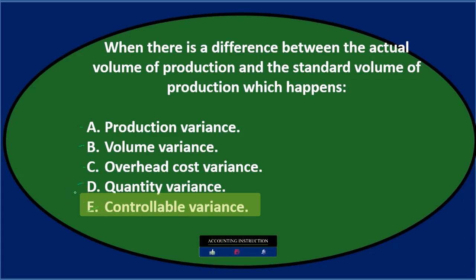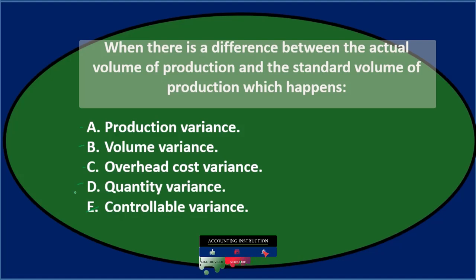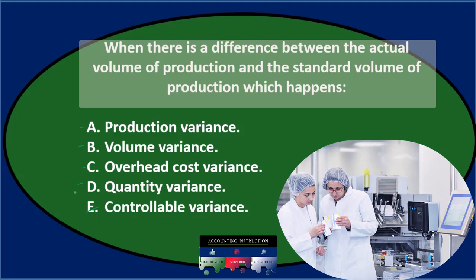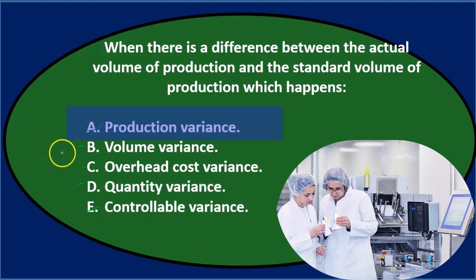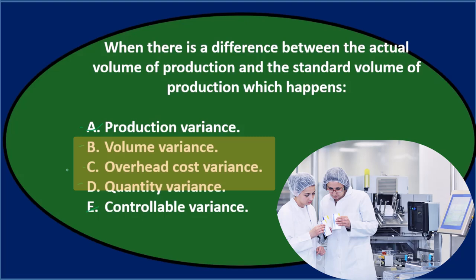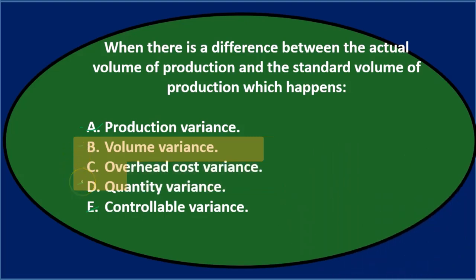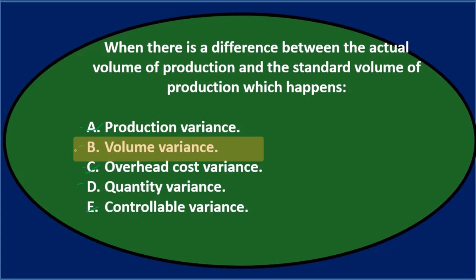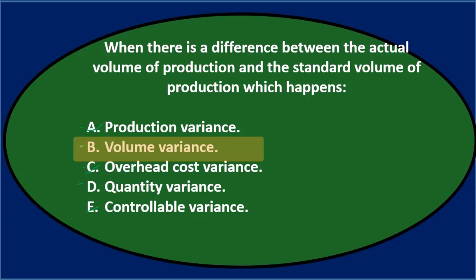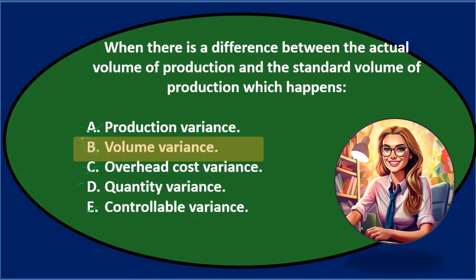Going through again: production variance doesn't seem like it's going to be related to production volume. Of the remaining choices, B, C, and D sound more reasonable. Volume variance and quantity variance sound similar to each other, so removing C (overhead cost variance). Between volume variance and quantity variance, we typically call it the volume variance. Final answer B — volume variance.